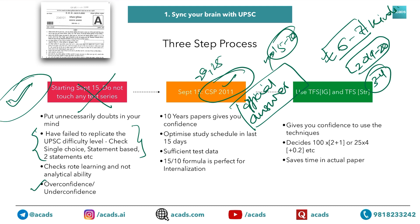Solve 10 years of papers because it will give you confidence, and this is sufficient test data. In any analytical model, you need sufficient data on which to frame your strategy. If you have 7 to 10 years of question papers, you will get something around 800 to 1000 questions — enough to frame your strategy.